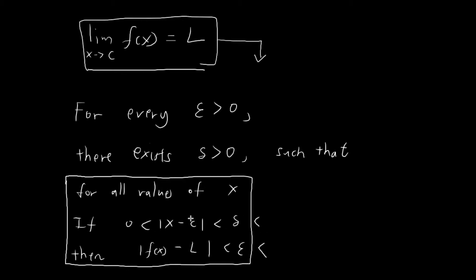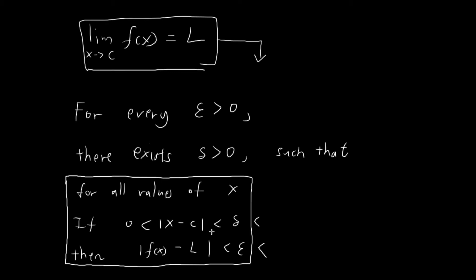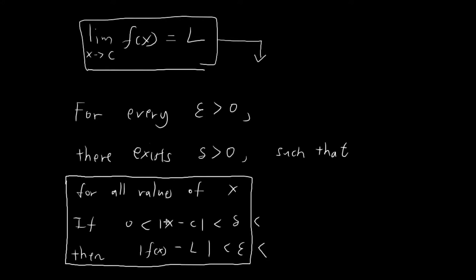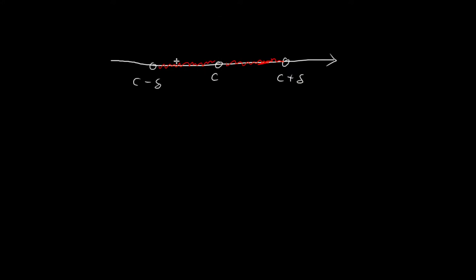The first statement says that x is a point lying within a distance of delta away from the point c. We can visualize this on an axis: let's say this point is c, this point is c plus delta, and this point is c minus delta, so x lies somewhere within this shaded region. Note that this shaded region does not include the point c itself, because the distance is strictly greater than zero, so x cannot equal c. This is actually why functions that are not defined at c can still have a limit at c — the limit does not concern itself with the point c.